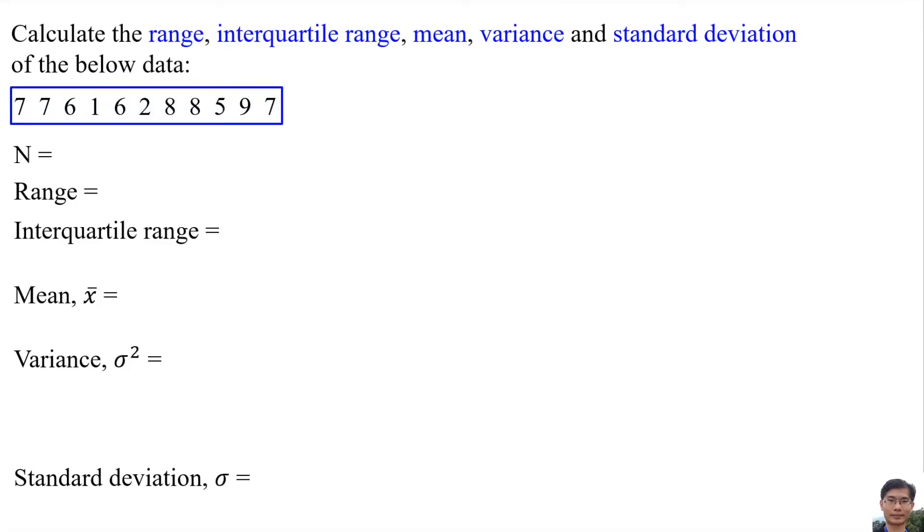Calculate the range, interquartile range, mean, variance, and standard deviation of the below data. N means the total number of data: 1, 2, 3, 4, 5, 6, 7, 8, 9, 10, 11. So there are 11 data.